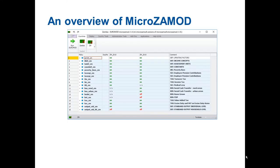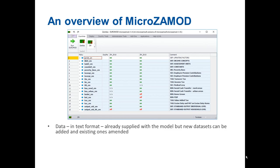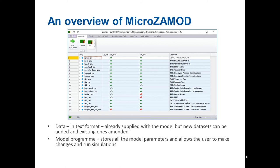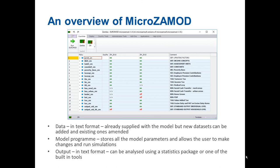Here is an overview of the model. We have data in text format, which is already supplied with the model, but new datasets can be added and existing ones amended. We then have the model program, which stores all model parameters and allows the user to make changes and run simulations. Lastly, we have output also in text format, which can be analyzed using a statistics package or one of the built-in tools. MicroZamod has a built-in statistics presenter capable of quite a number of analyses.